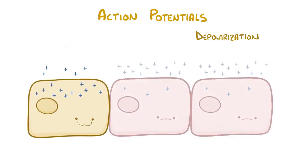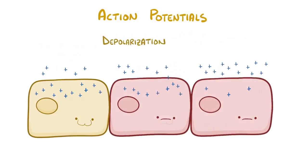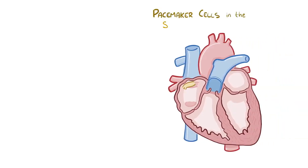If one cell after another depolarizes, then there's a depolarization wave, which is just like a crowd of people doing the wave at a football stadium. There are a group of pacemaker cells in the sinoatrial node, or SA node, which is a small sinus or cavity tucked up into the right atrium.